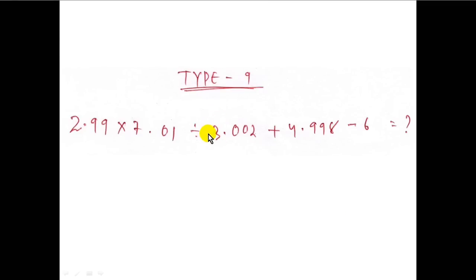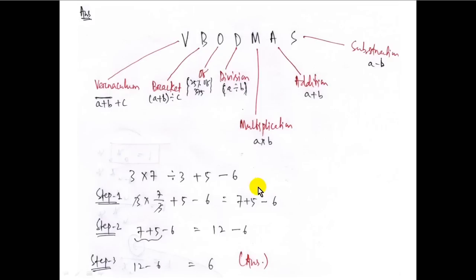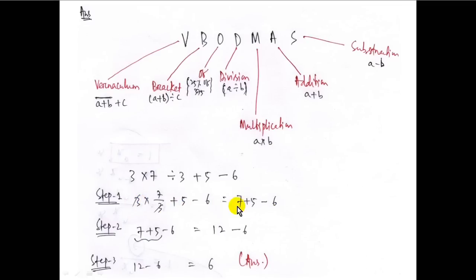Type 9 is very important for competitive exams. For example: 2.997 into 7.01 into 3.002 into 4.998 minus 6. We use VBODMAS — V stands for Vinculum, followed by Brackets, Division, Multiplication, Addition, Subtraction. Applying this gives 7 plus 5 minus 6, which is 12 minus 6, and the required answer is 6.